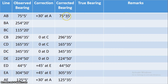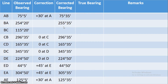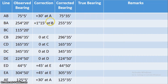The correction at station A is +30 minutes. Since lines AE and AB are both taken from station A, the same +30 minutes correction applies to AB as well. Adding this correction to the AB observed bearing gives a corrected bearing of 75 degrees 35 minutes for AB.